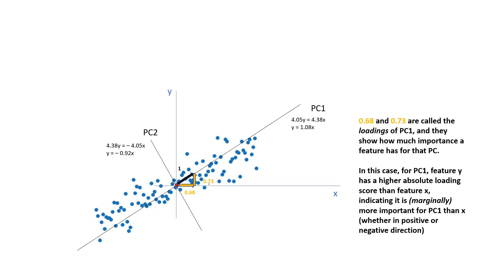This 0.68 and 0.73, these two are called the loading scores of PC1. And they show how much importance a particular feature has for that particular principal component.